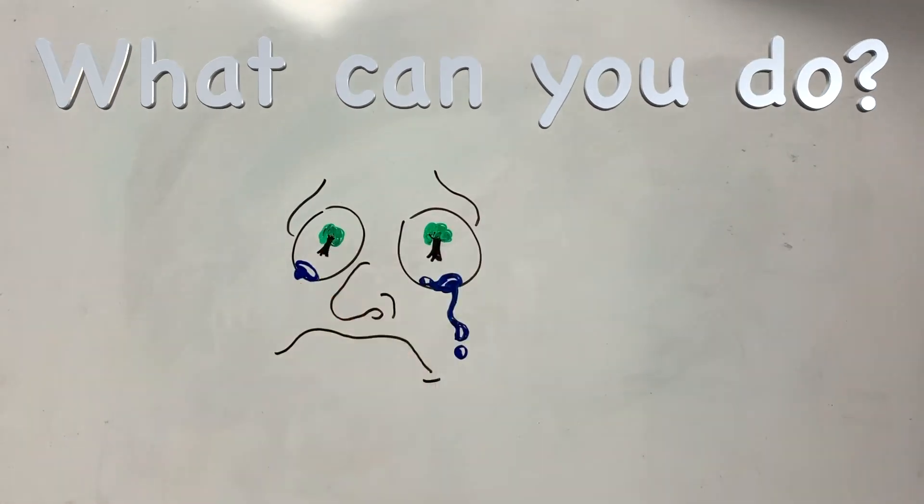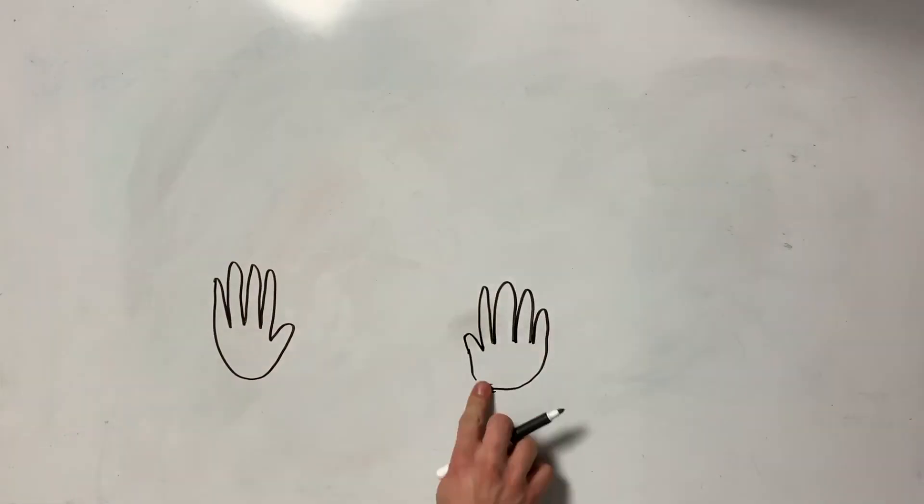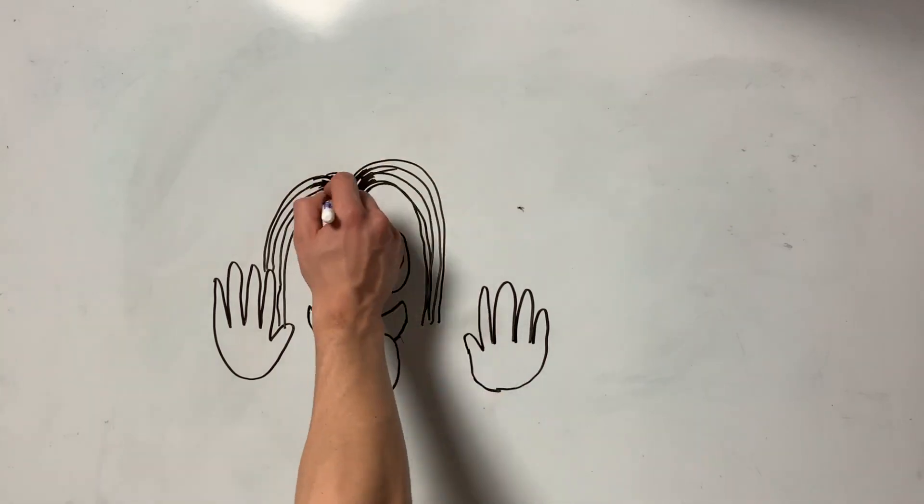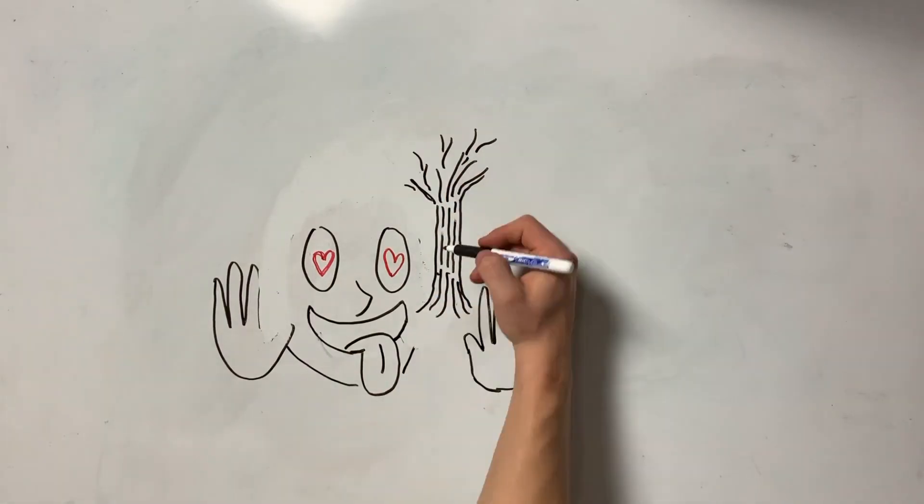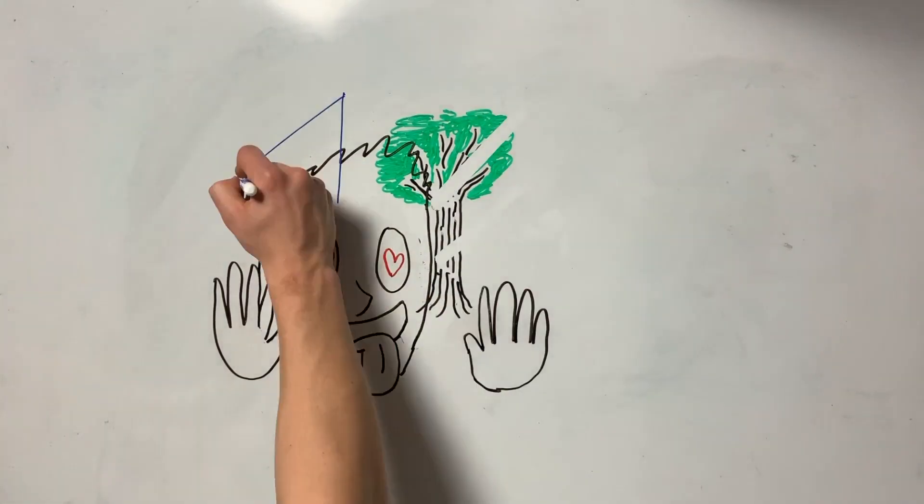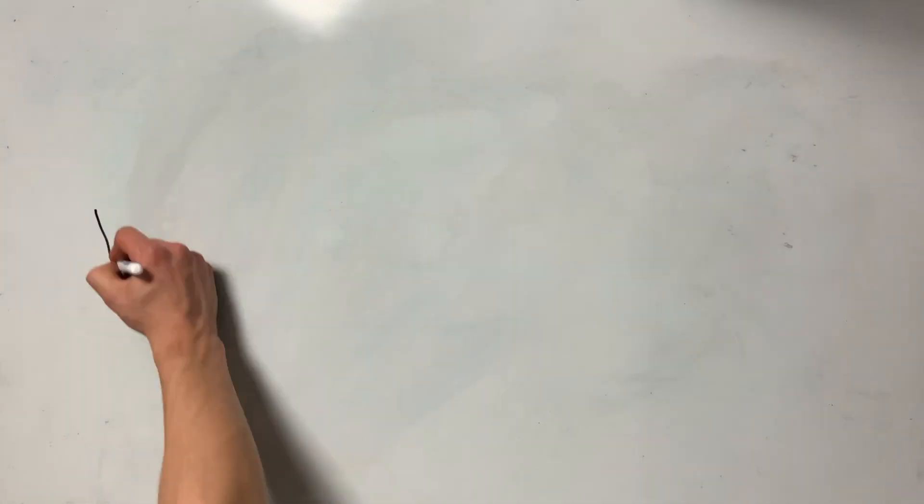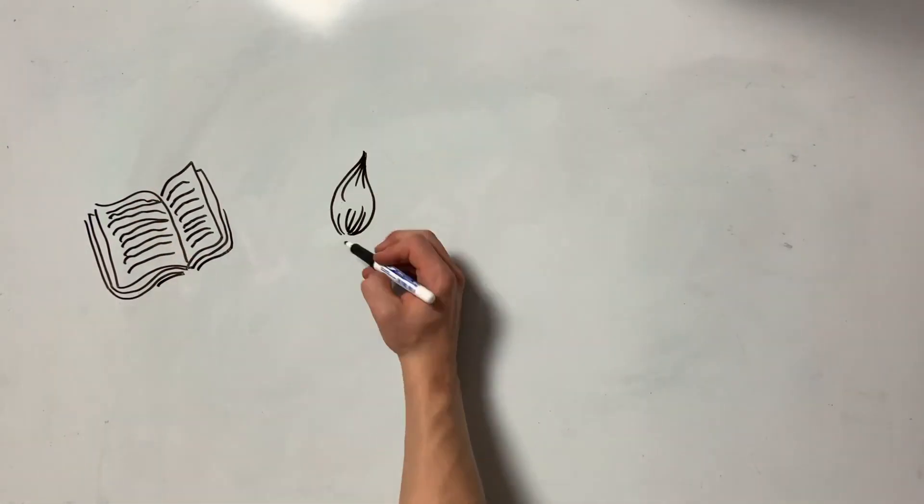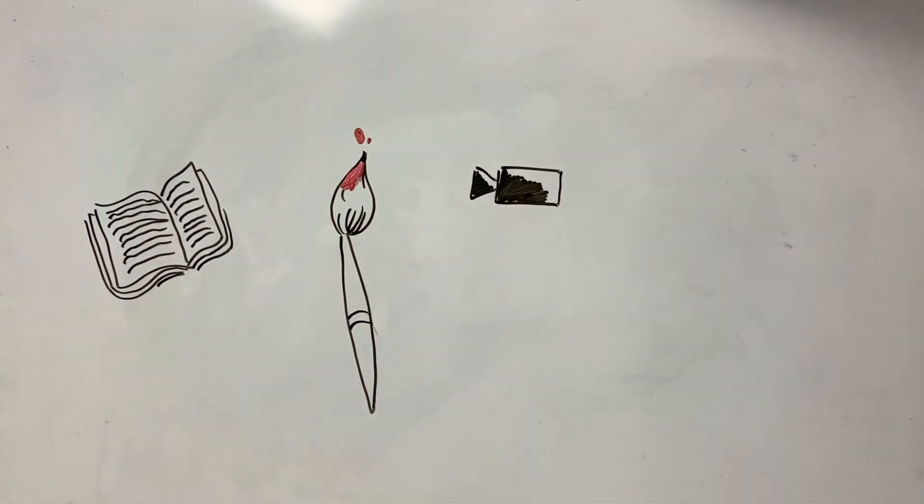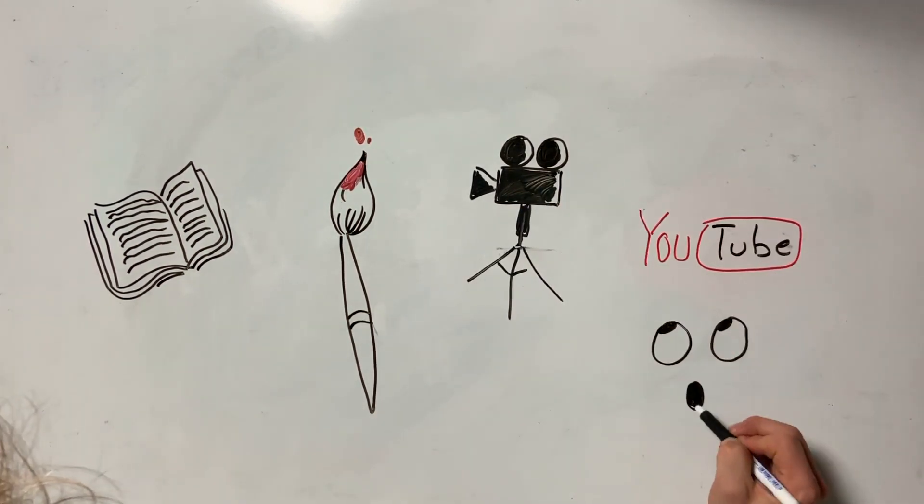So, what can you do? Well, number one, only go out of your house if it is absolutely necessary. Stay inside and find creative ways to entertain yourself. Read a book, draw a picture, watch a movie, play a game with your brother or sister, do a science experiment. I mean, be creative.